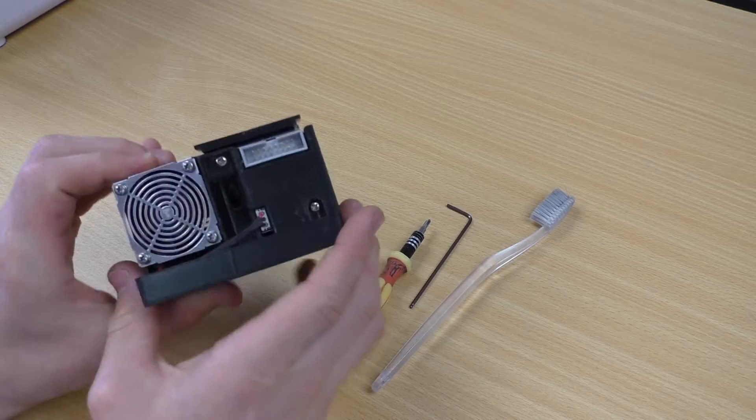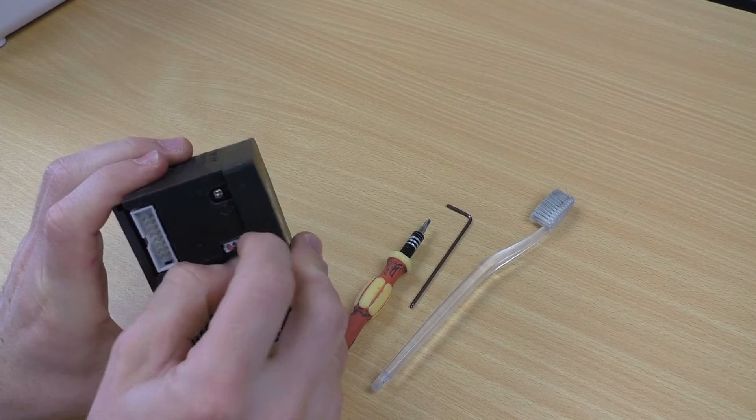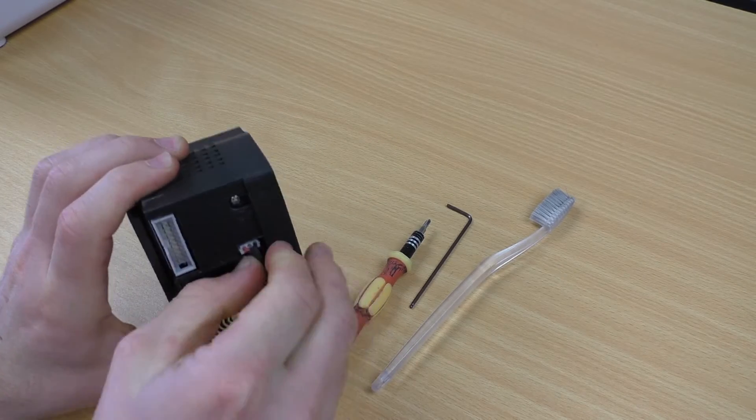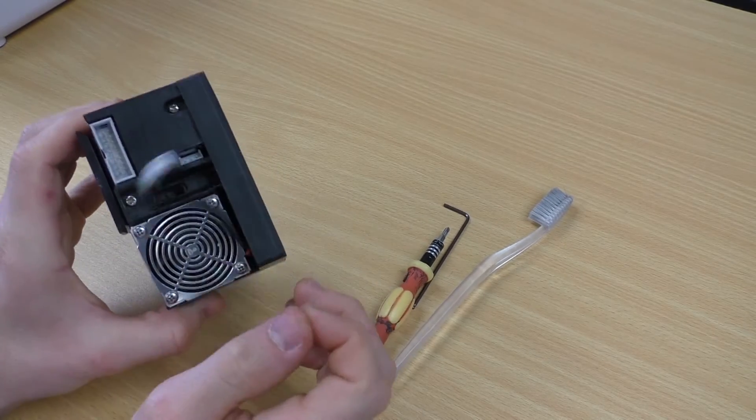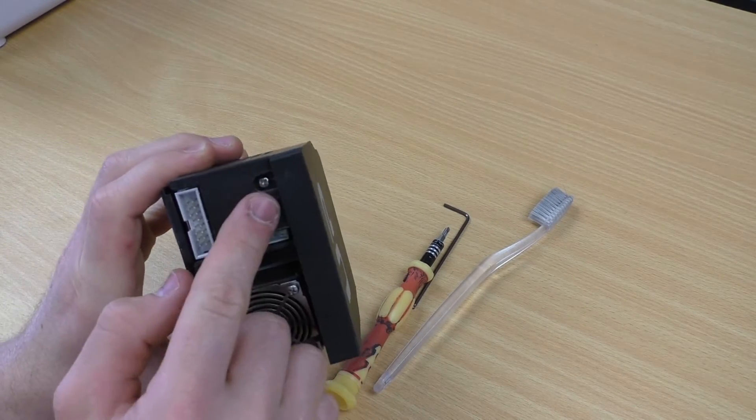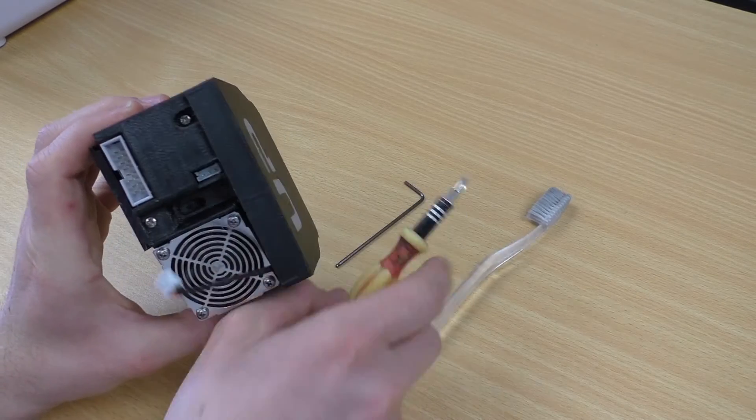So on the top first thing we need to do is unplug this white fan cable. Removing the fan cable we've got two screws that we need to undo, one here and one here, so we'll need a Phillips head screwdriver.